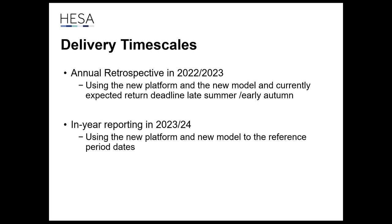On delivery timescales: when is Data Features going live? The plan is a retrospective year for 22-23 using the new HESA data platform and new data model. We're working out exactly what that year means, so the deadline isn't quite set. Then for 23-24, that will be the first year of properly in-year data — three times a year starting in 2023.